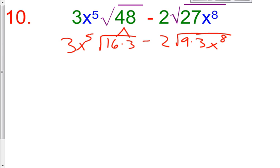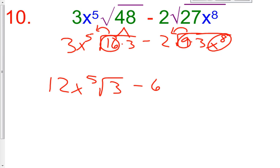Alright, this 16 can be brought outside the radical as a 4. And 4 times the 3 is 12x to the 5th square root of 3. This 9 can be brought outside the radical to make a negative 6. Because the square root of 9 is 3. And 3 times a negative 2 is a negative 6. This x to the 8th can be brought outside the radical as an x to the 4th. So, we're going to have a negative 6x to the 4th times the square root of 3.